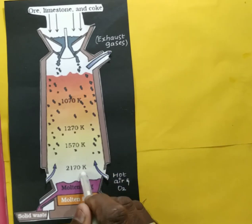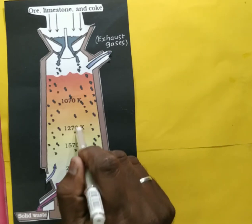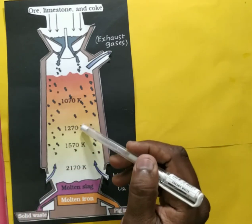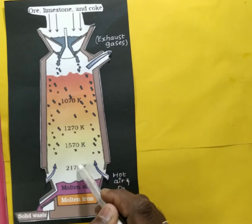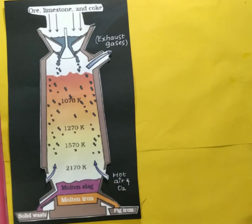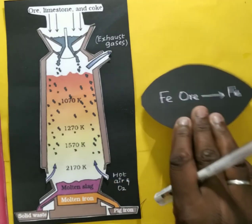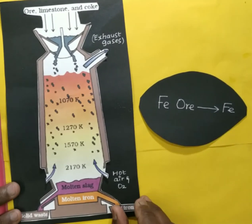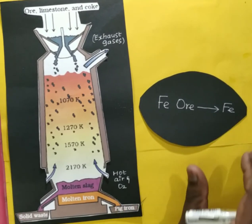There are four zones: Zone 1, Zone 2, Zone 3, and Zone 4. Now, what is the role of this blast furnace? Why is it used? How is it used?